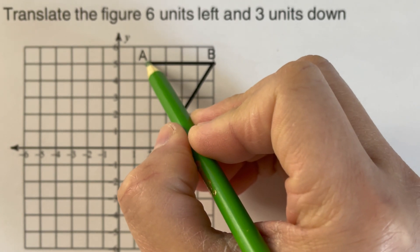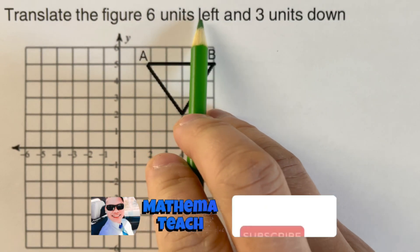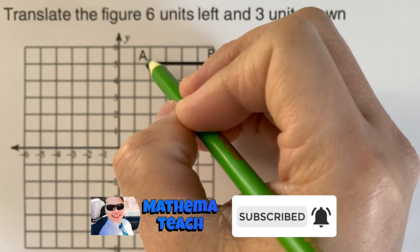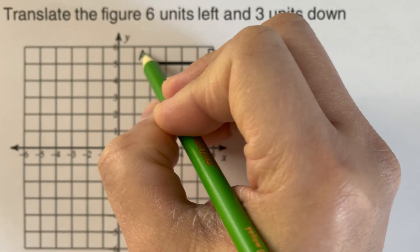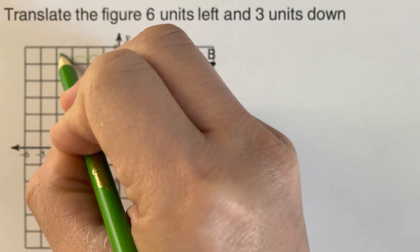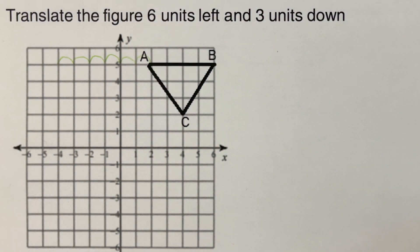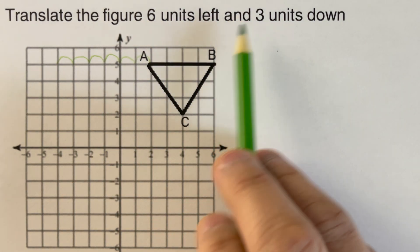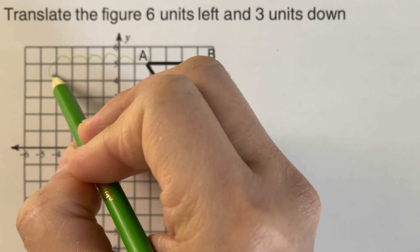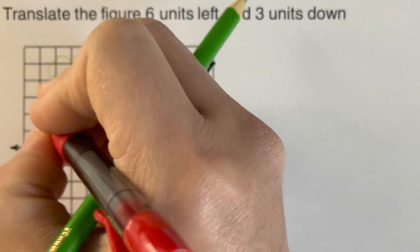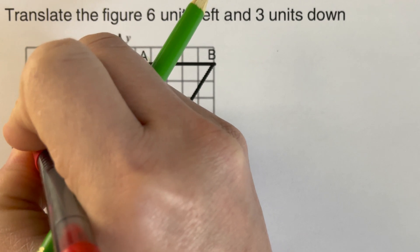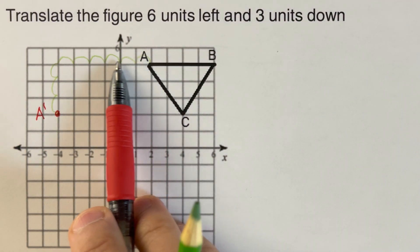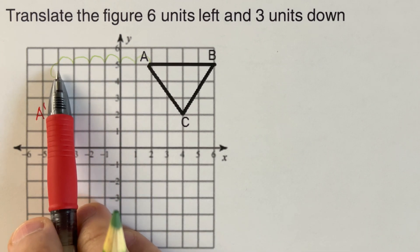So we can go ahead and say that from A, we are moving six units left — each of these will be moved six units left. So we're going to start with A: one, two, three, four, five, six. And then we move three units down: one, two, three. So this is the location for our A prime, because again, we moved six places to the left and three places down.